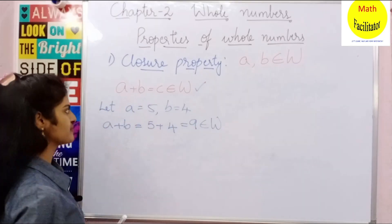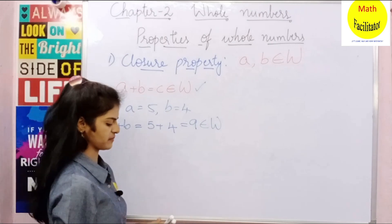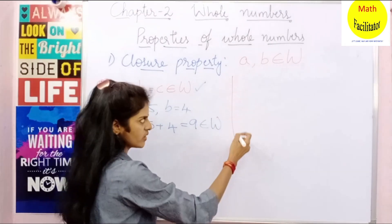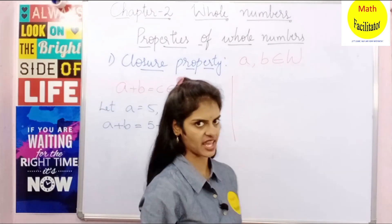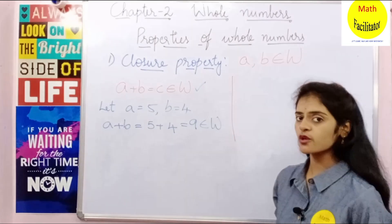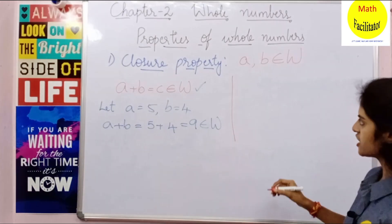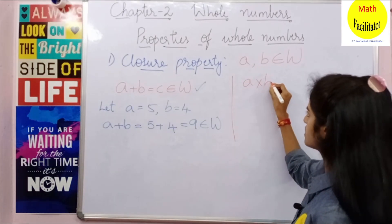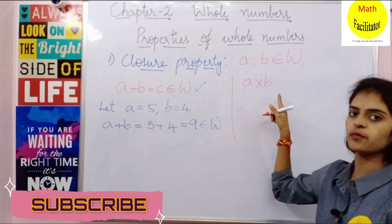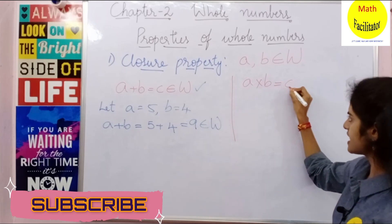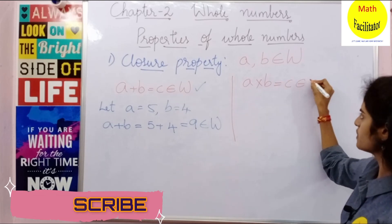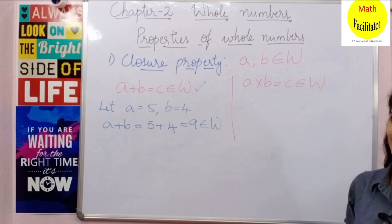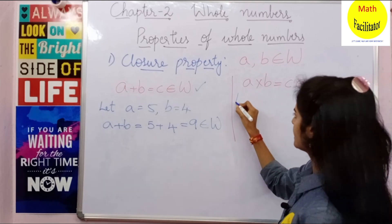Let us check for multiplication. Suppose A and B are two whole numbers, the same case. For multiplication, A into B — the product C should also belong to whole numbers. Let us check with an example.